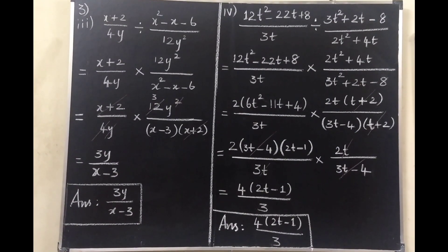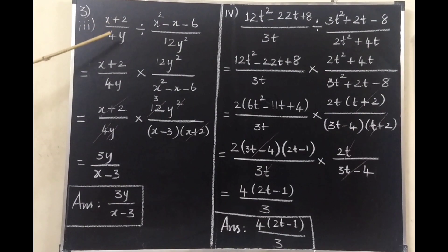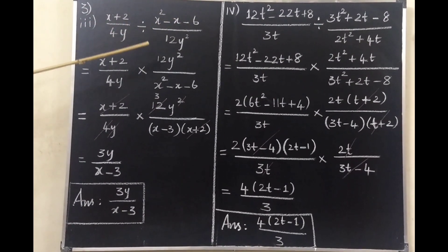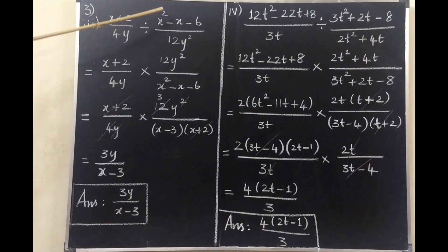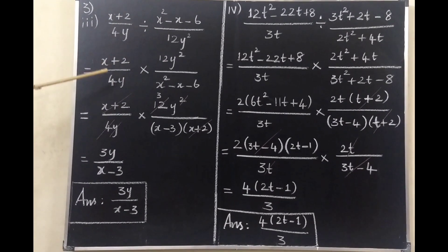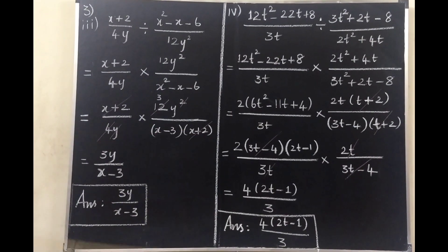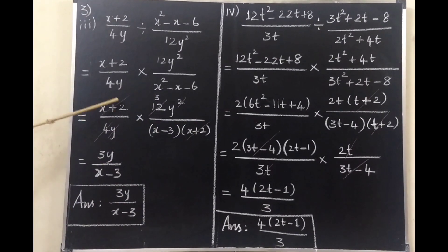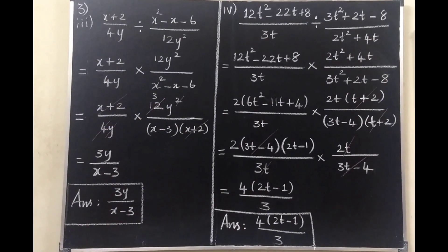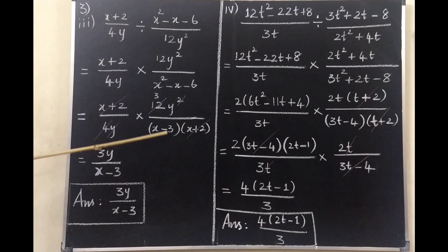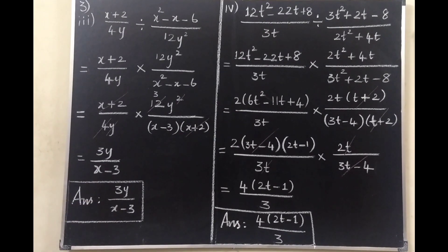Third sum, sub-problem: (x+2)/4y ÷ (x²−x−6)/12y². This is a division of rational expressions. First, change into multiplication form by taking the reciprocal of the second expression. Then factorize: x²−x−6 = (x−3)(x+2). Cancel (x+2) with (x+2). Then 12 divided by 4 is 3, and y² divided by y leaves y. In the numerator we have 3y, and in the denominator x−3. So the answer is 3y/(x−3).